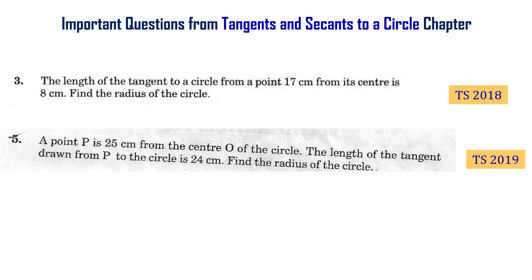The length of the tangent to a circle from a point 17 centimeters away from its center is 8 centimeters. Find the radius of the circle.